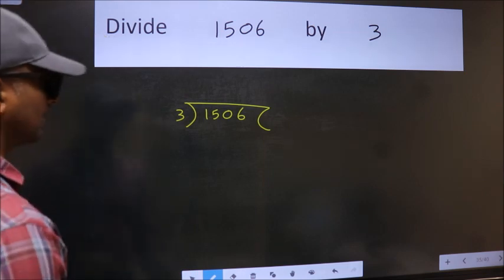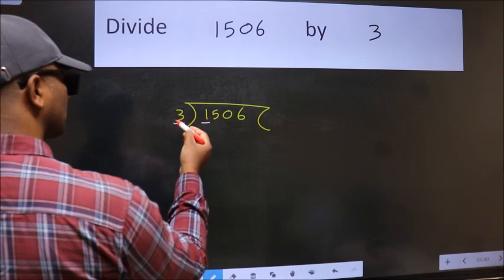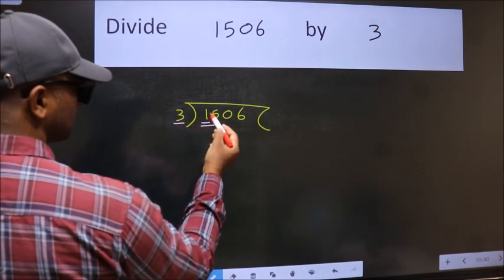Next. Here we have 1 and here 3. 1 is smaller than 3. So we should take 2 numbers, 15.